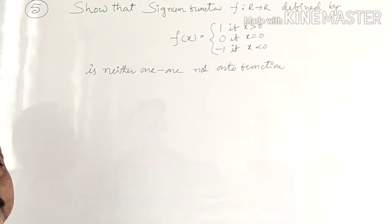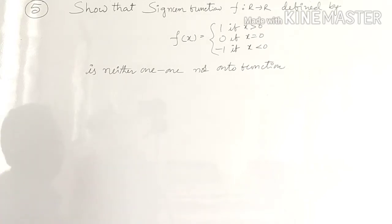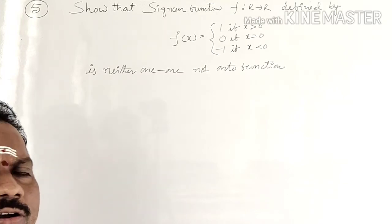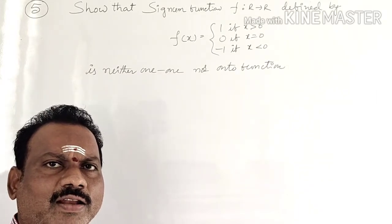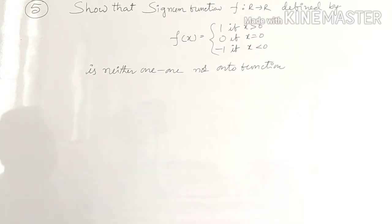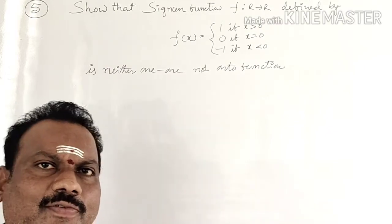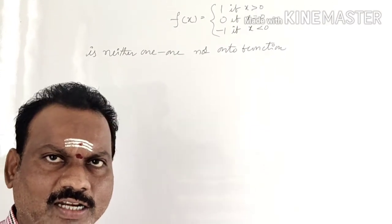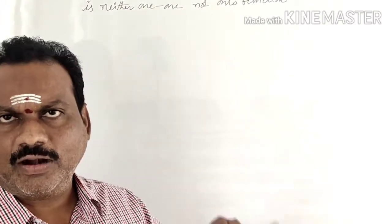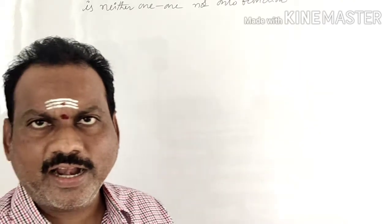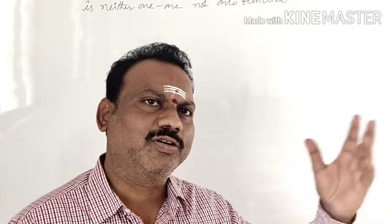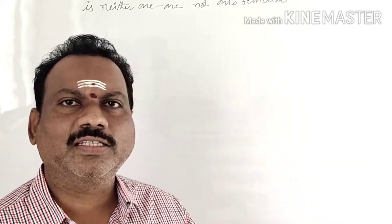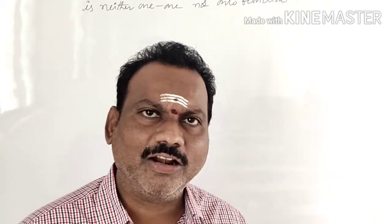Next, fifth problem: show that the signum function f mapping from R to R, defined by f(x) = 1 when x > 0, 0 when x = 0, and −1 when x < 0, is neither one-one nor onto. You are familiar with this graph from first PU, along with modulus, greatest integer, cubic, quadratic, reciprocal, identity, and constant functions. You must know the domain and range of each.